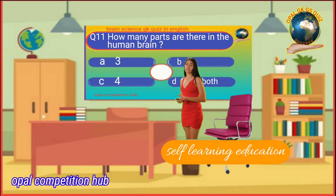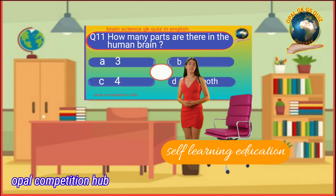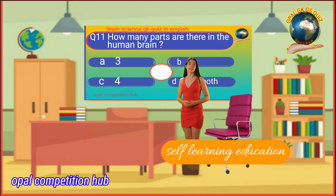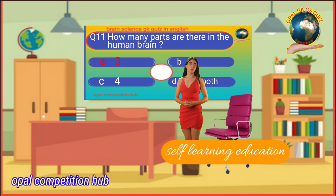Question number 11: How many parts are there in the human brain? Option A: 3. Option B: 5. Option C: 4. Option D: Both A and B. Your time starts now. Your answer will be Option A: 3.